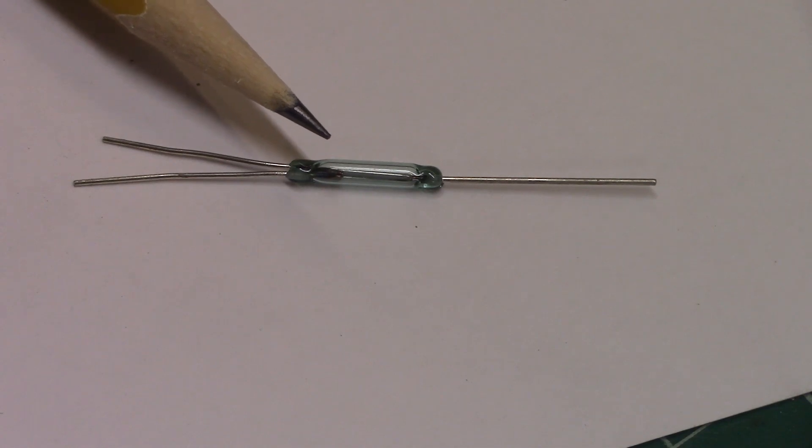So they use these in burglar alarms and stuff, like where the window comes down and you move the magnet and then the alarm goes off. That would be a normally closed reed switch.